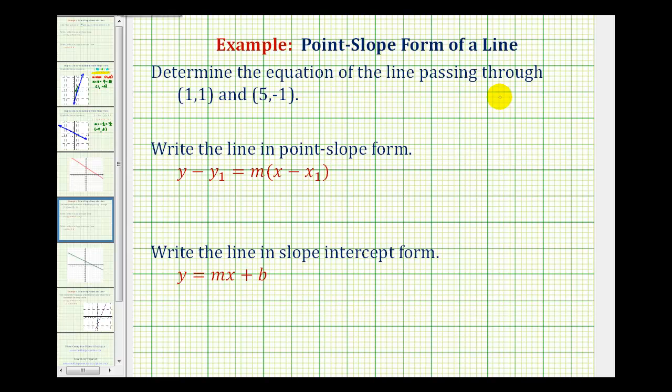We want to determine the equation of the line passing through the two given points. We want the linear equation to be in both point-slope form and slope-intercept form. Notice both of these equations do require the slope.